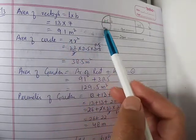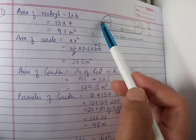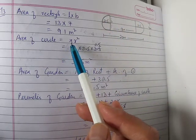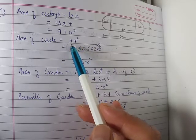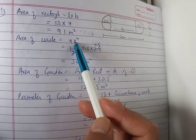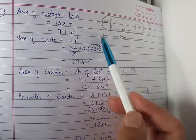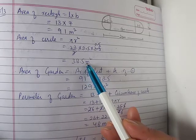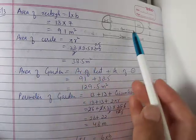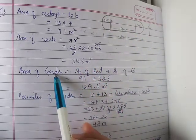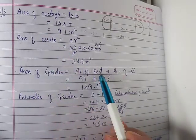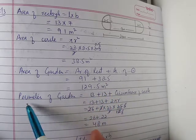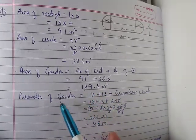This is a semicircle. For the area of a circle, the formula is πr². π equals 22/7, and the radius is 3.5. Calculating: 3.5 times 3.5 gives us 38.5 square meters. The total area of the garden - the rectangle plus the circle area - equals 129.5 square meters.